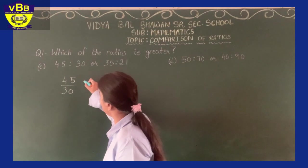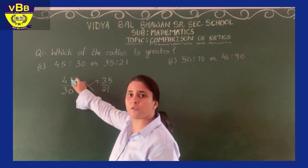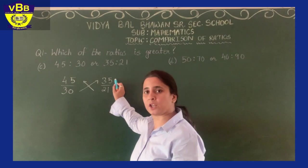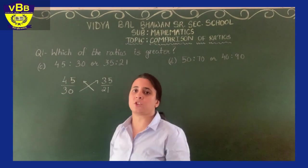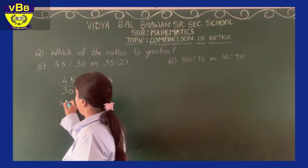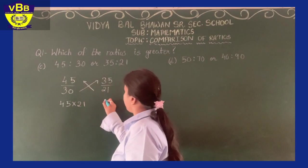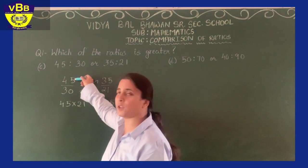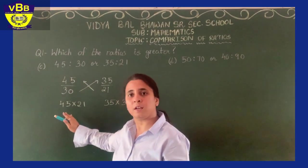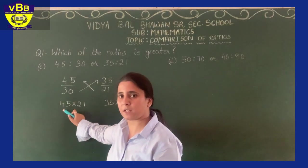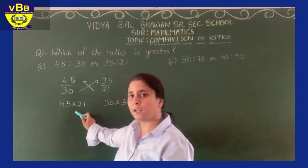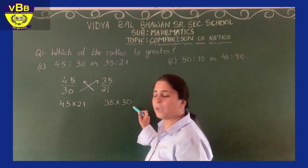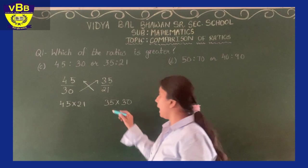The next step is to do the cross multiplication. The numerator of the first fraction is multiplied by the denominator of the second fraction, and the numerator of the second fraction is multiplied by the denominator of the first fraction. That means 45 multiplied by 21, and 35 multiplied by 30. One thing to keep in mind: wherever the numerator is, write that product on the same side.